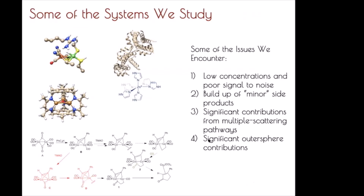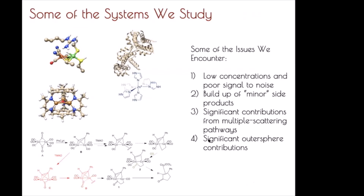We deal with small discrete molecular systems, many in a biological context, and we're also interested in studying reactive intermediates. Issues we encounter include low concentrations giving poor signal-to-noise, buildup of side reaction products that often aren't so minor, CO and CN ligands causing significant contributions from multiple scattering pathways that complicate analysis, and significant outer sphere contributions that also overlap. So we're always trying to think of ways to overcome these issues.